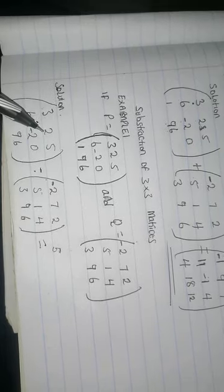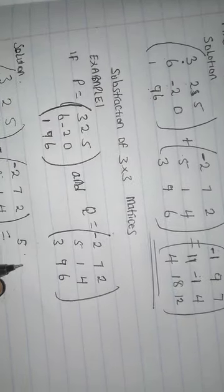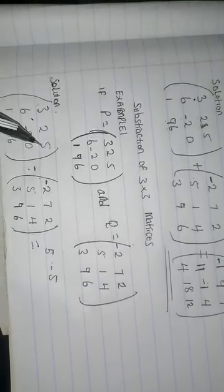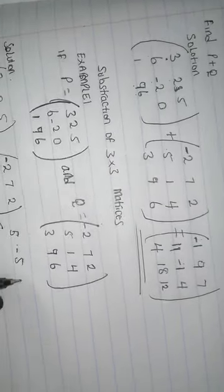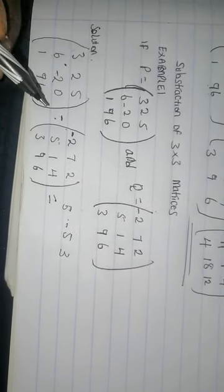Then you take 2 minus 7 which will give you negative 5. Then you take 5 minus 2 which will give you 3. Then you take 6 minus 5 which will give you 1.